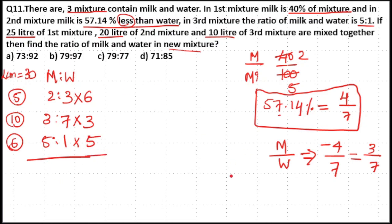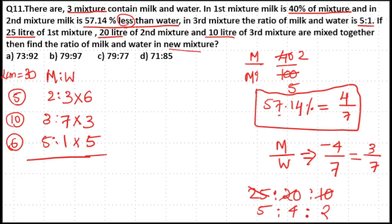We have 25 liters of the first mixture, 20 liters of the second mixture, and 10 liters of the third mixture. The volume ratio is 25:20:10, which simplifies by dividing by 5 to give 5:4:2. So we multiply the first ratio by 5, the second ratio by 4, and the third ratio by 2.